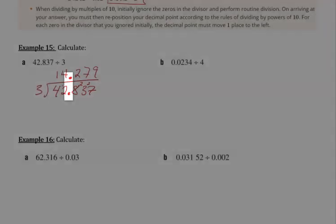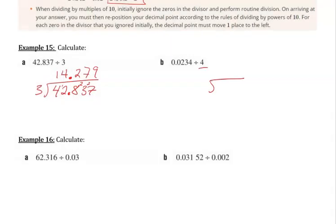Now, same for this one. We are dealing with a whole number divisor, so we're not going to do anything with that. And we're going to keep 0.0234 where it is. What's the first thing I'm going to do? I'm going to put my decimal point in my quotient directly above what it is in the dividend.